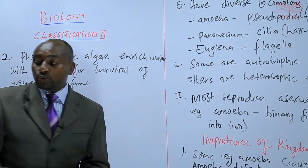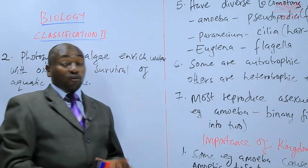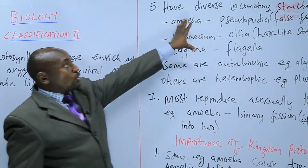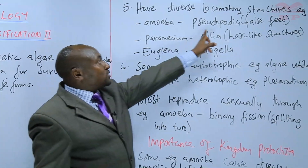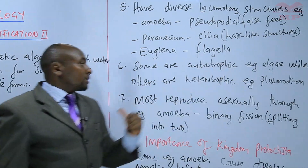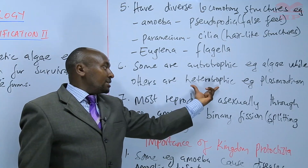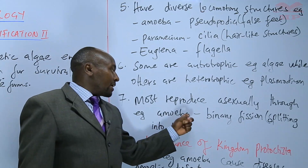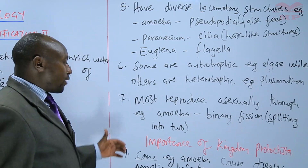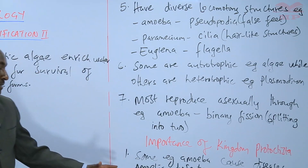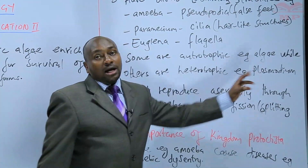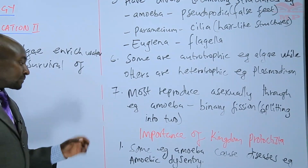That is where we stop for today. We have learned the characteristics of kingdom Protoctista — that they are eukaryotic, that they have diverse locomotory structures such as pseudopodia in amoeba, cilia in paramecium, and others. Some are autotrophic and make their own food, while others are heterotrophic and rely on already manufactured food. They reproduce asexually — for example, amoeba reproduces by binary fission. We also noted that they cause diseases such as amoebic dysentery and malaria, which is caused by plasmodium, also a member of kingdom Protoctista.